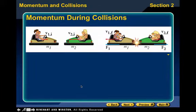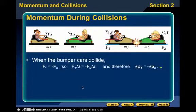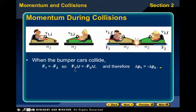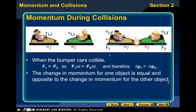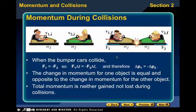We're looking at collisions. When bumper cars collide, force one is equal to the negative force two because they're moving in opposite directions. Since they're in contact with each other for the same time period, their impulses are the same. And so we can also say that the change in momentum is equal to each other — the change in momentum of one object is equal and opposite to the change in momentum for the other object.